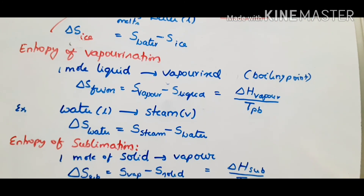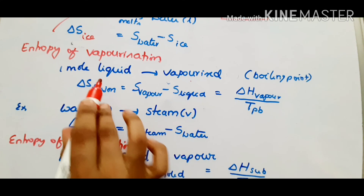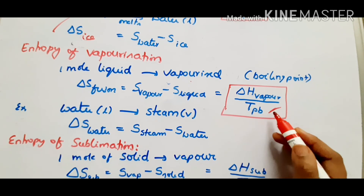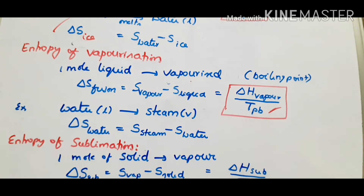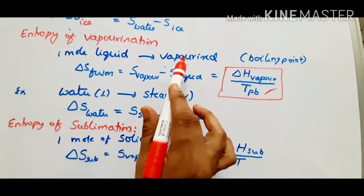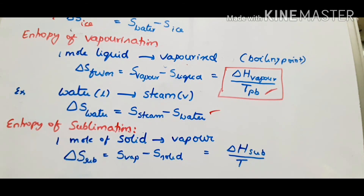Entropy of vaporization: vaporization occurs when liquid reaches 100 degrees centigrade and vaporizes — that is the boiling point of water. Delta S vaporization equals S vapor minus S liquid, which equals delta H vaporization divided by the boiling point temperature T. For example, liquid water converting to steam: delta S equals S steam minus S water. That is the formula.